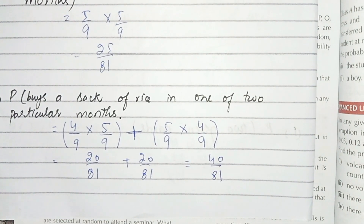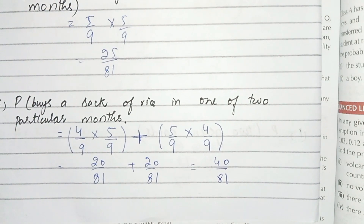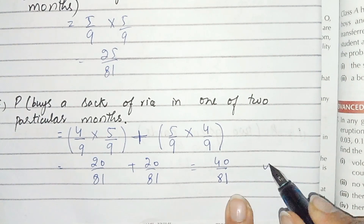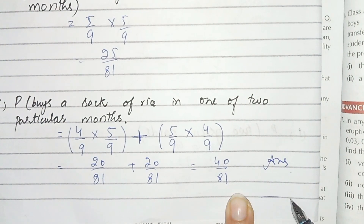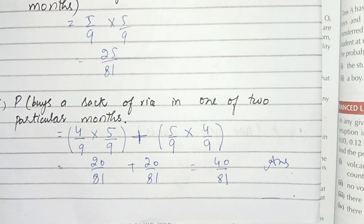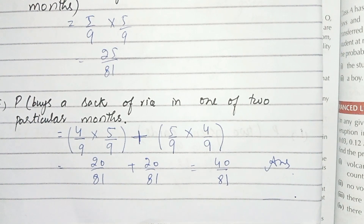Adding 20 over 81 and 20 over 81 gives 40 over 81. This is the probability of buying a sack of rice in exactly one of the two particular months. Question 10 is now done. Thank you very much for watching. Take care of yourself. Allah Hafiz.